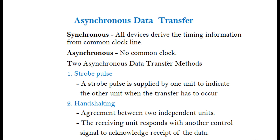Synchronous transfer: all devices derive the timing information from a common clock line. Asynchronous transfer: no common clock. Two asynchronous data transfer methods: (1) Strobe Pulse — a strobe pulse is supplied by one unit to indicate to the other unit when the transfer is to occur; (2) Handshaking — an agreement between two independent units where the receiving unit responds with another control signal to acknowledge receipt of the data.